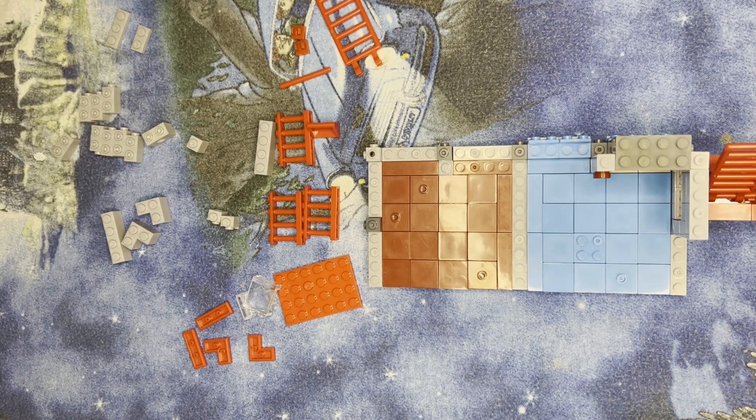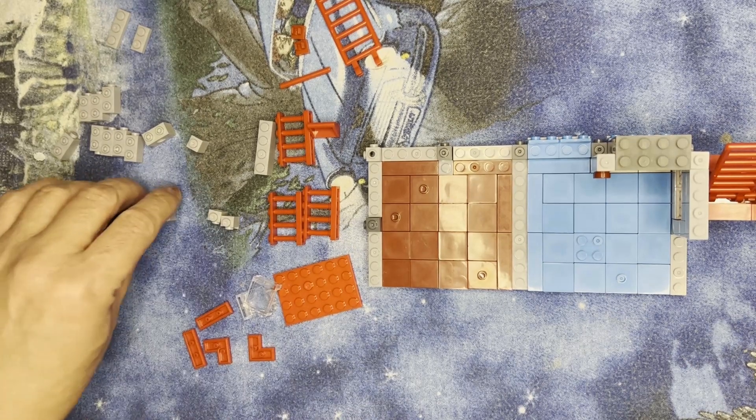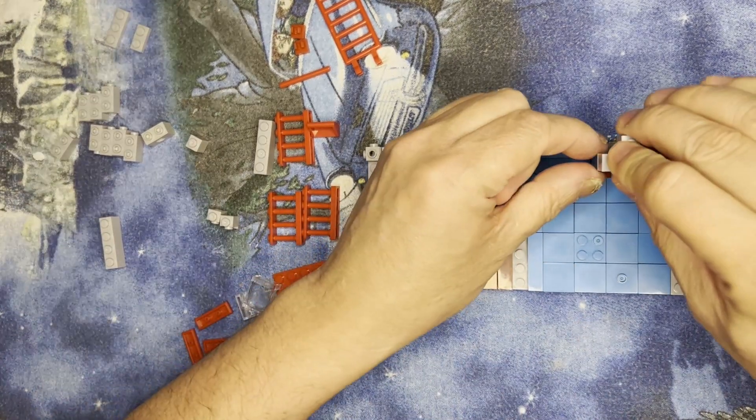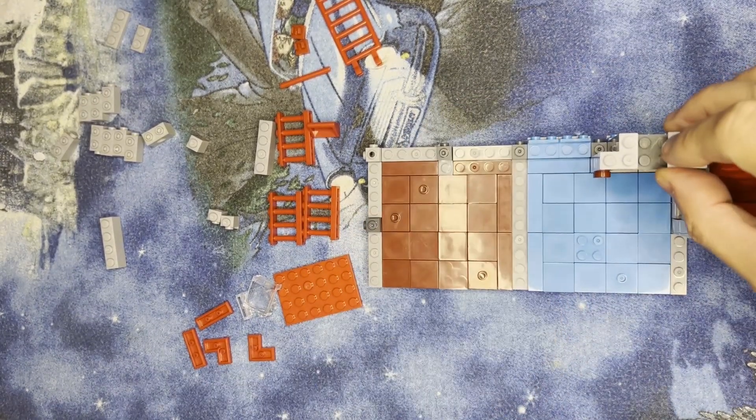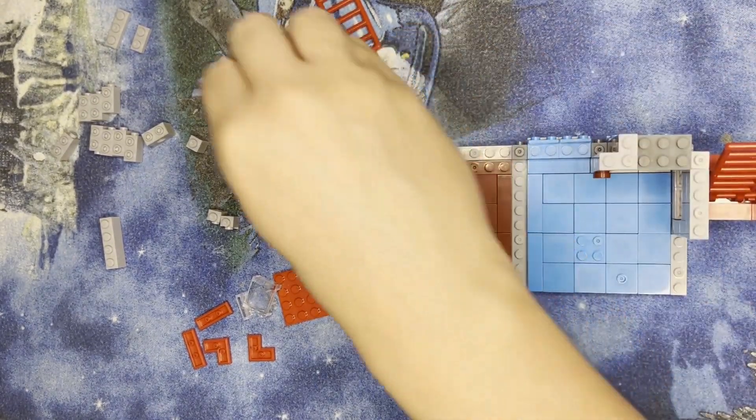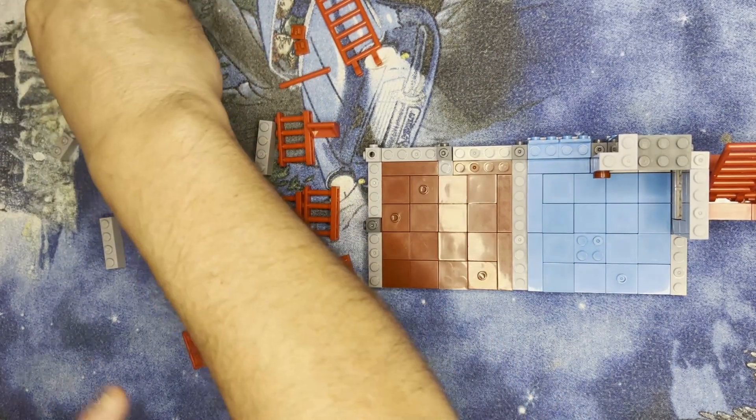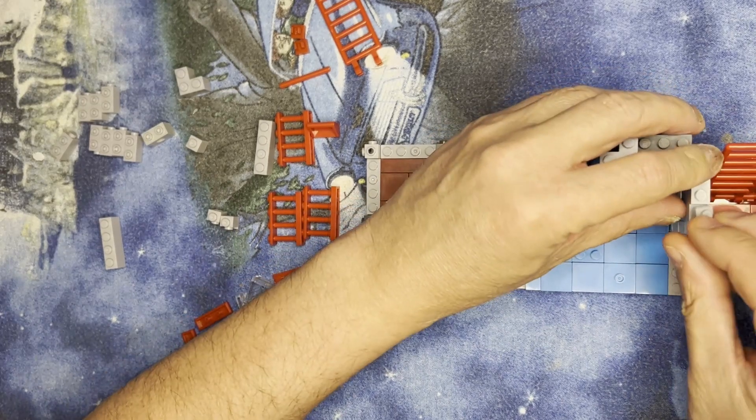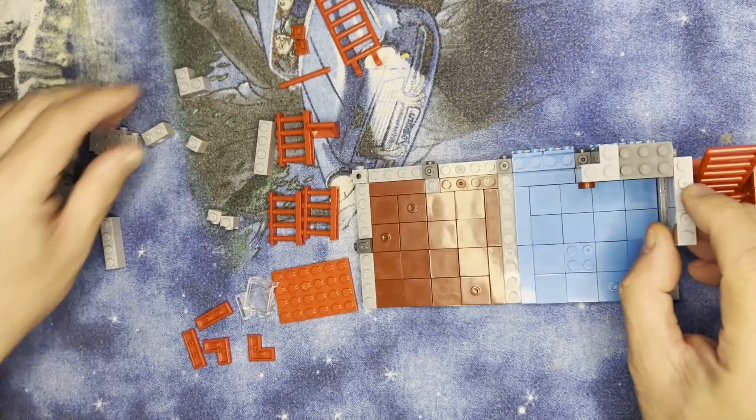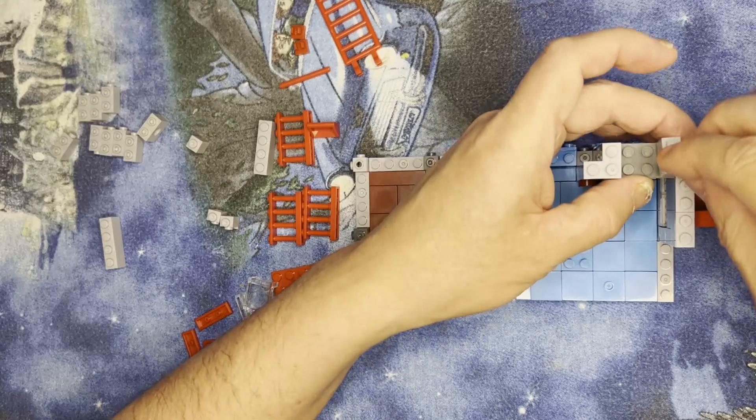Next, I'm gonna put these together. One here. One—oh, I think I forgot a step, but that's okay, I can still fix it. I'm gonna take these two flats and put them there. I'm gonna put this here.